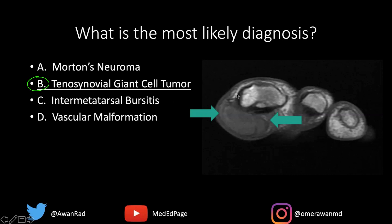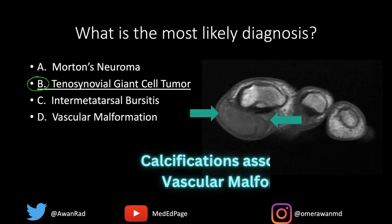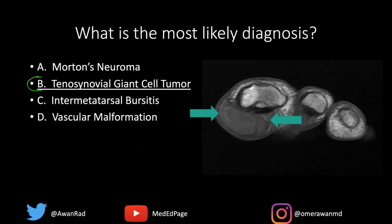Intermetatarsal bursitis is fluid also in the interspace, but it would be above — dorsal to — that intermetatarsal ligament, if you have fluid in the interspace. A vascular malformation would be a consideration, but oftentimes you can have calcifications or phleboliths associated with vascular malformations, which would be dark on MRI. We don't see that here.